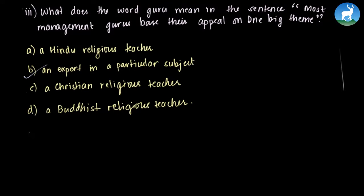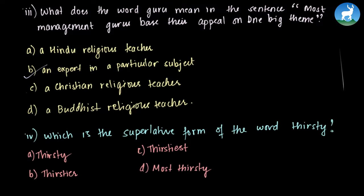The next question asks for the superlative form of the word 'thirsty'. The options are 'thirsty', 'thirstiest', 'thirsty', or 'most thirsty'. The answer is 'thirstiest'.